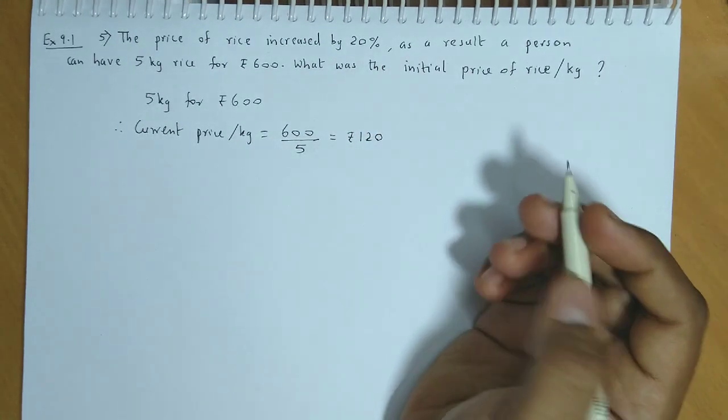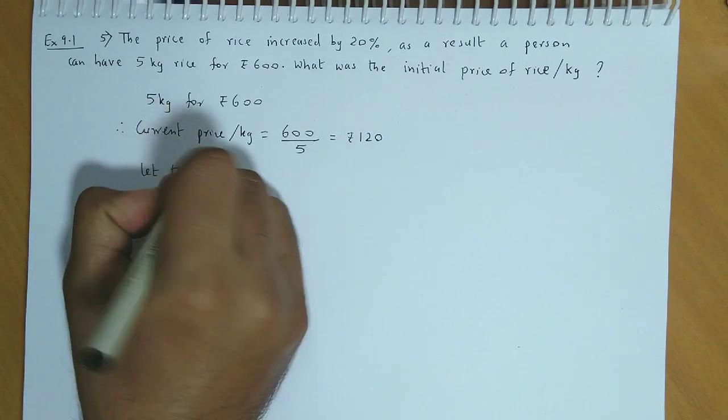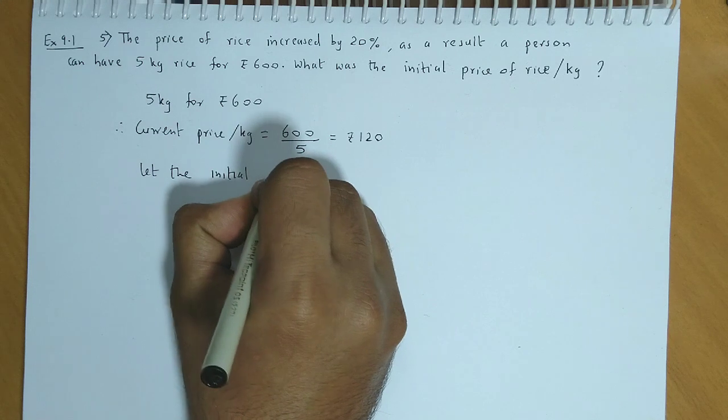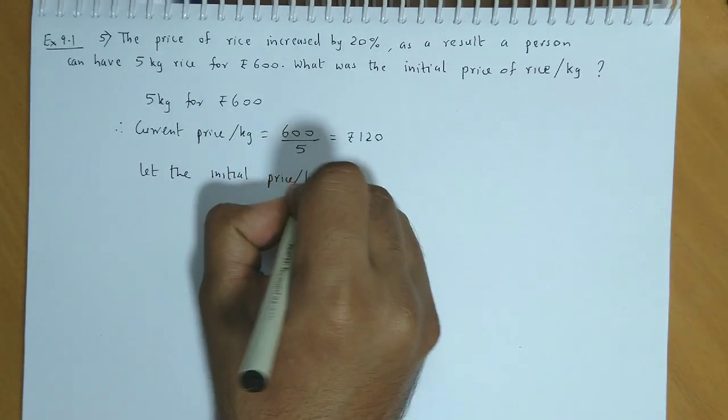We have to look for the initial price. So let the initial price be x. We have to look for the initial price per kg, so that we get x.